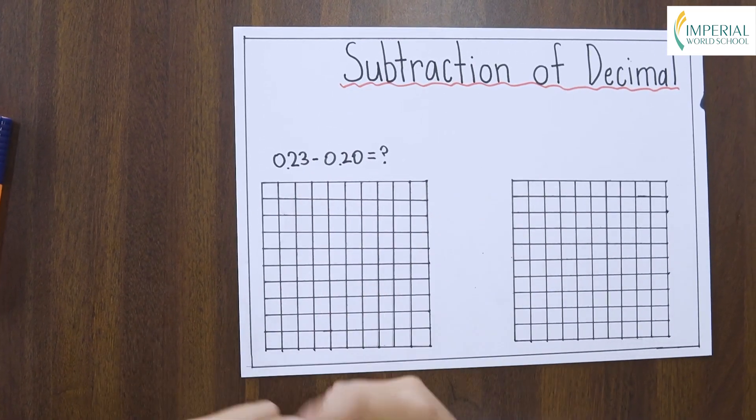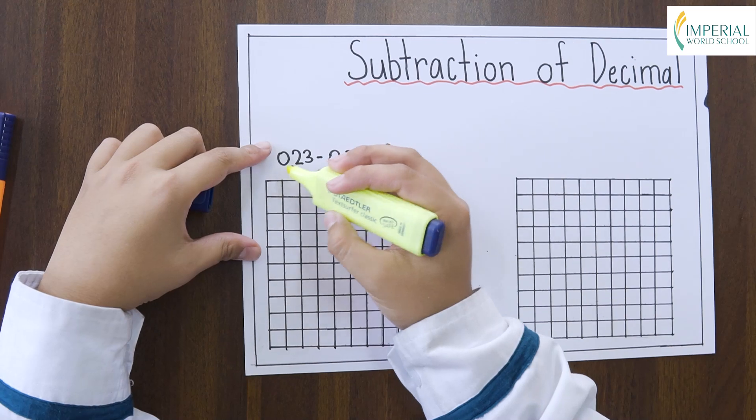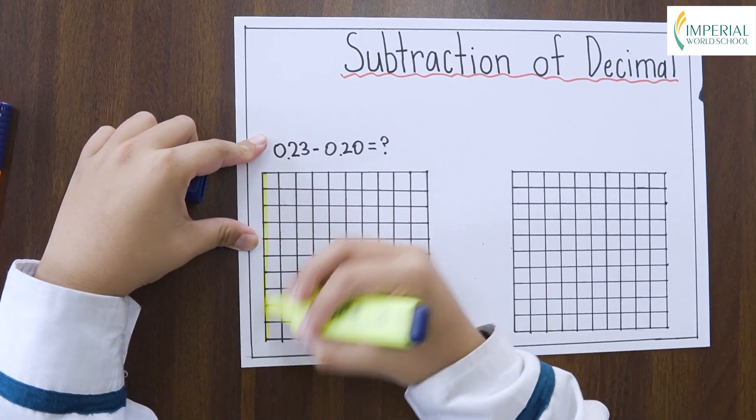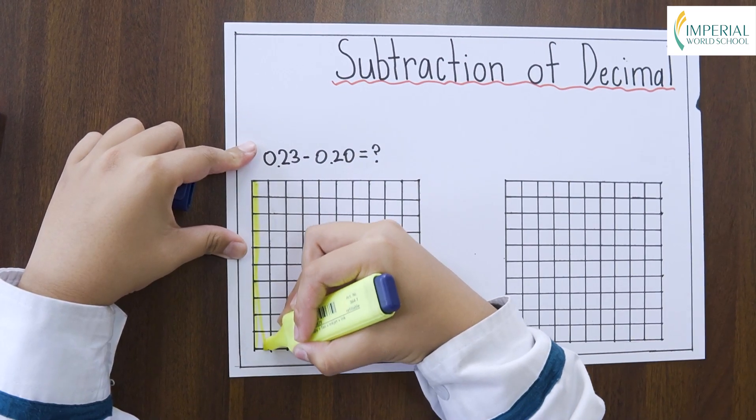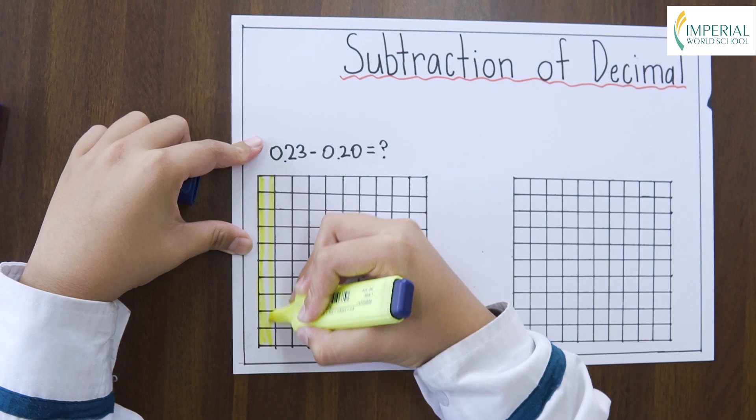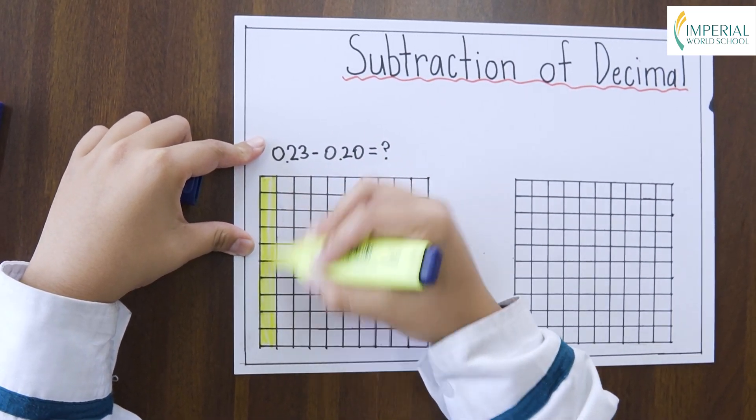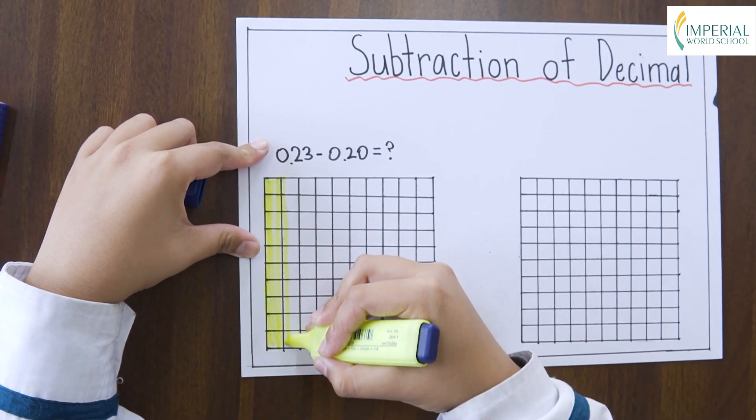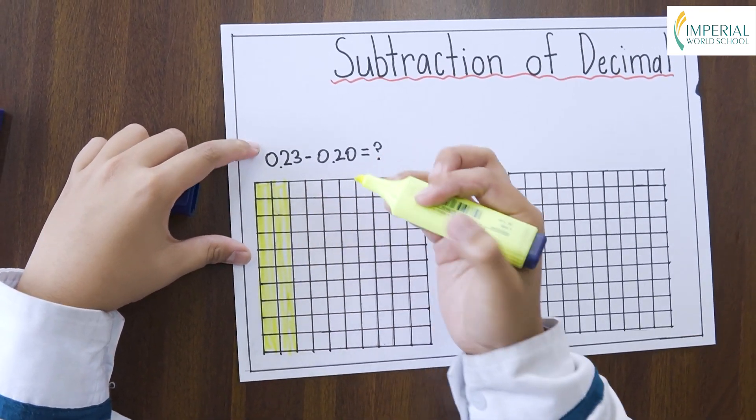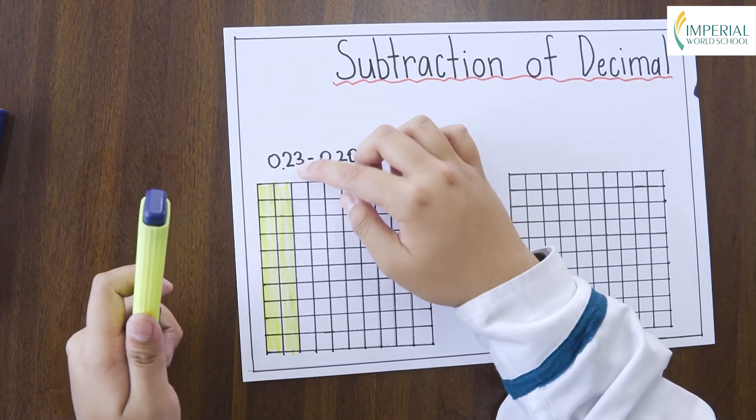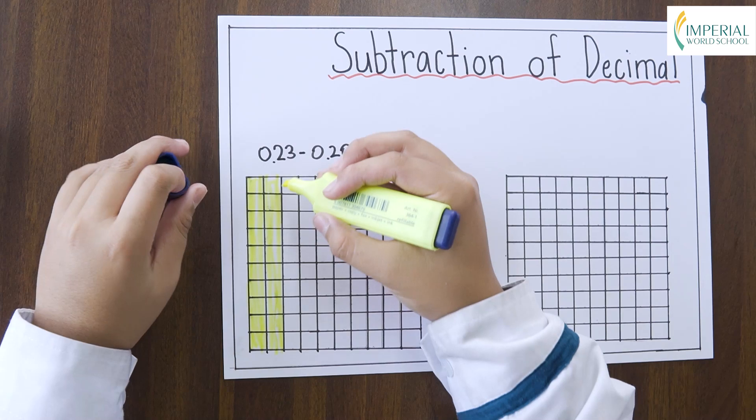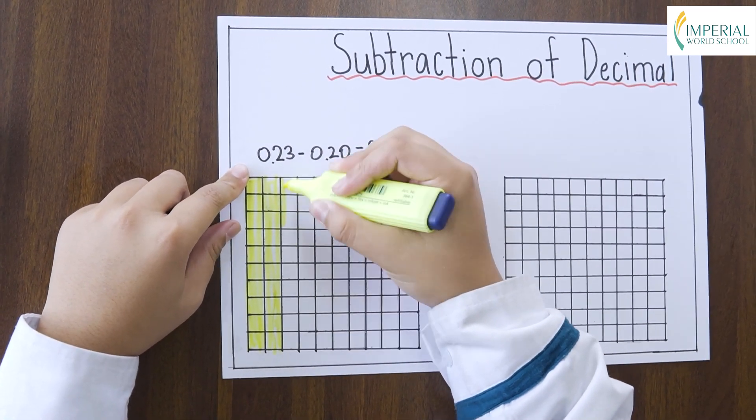So there is two here for two tenths, so we will have to shade two tenths. Now that we have finished with that, we will have to also put in the three. The three is in the hundredth place, so we will have to put three here.